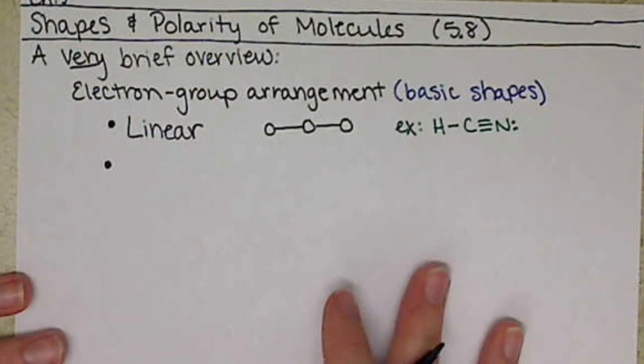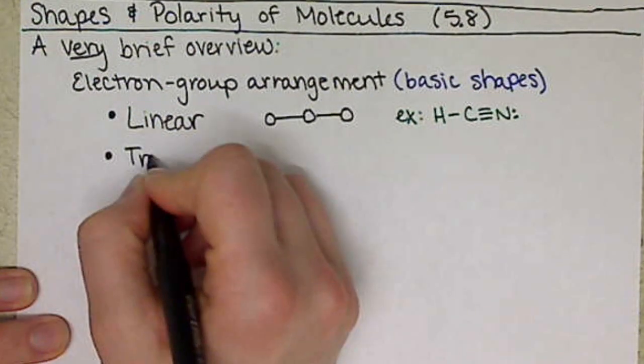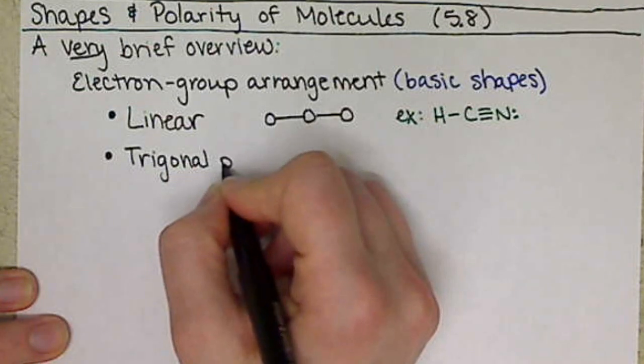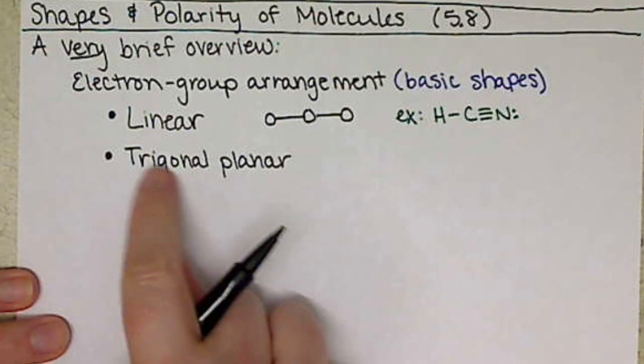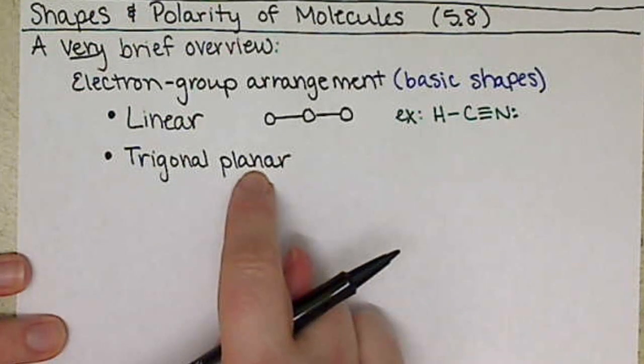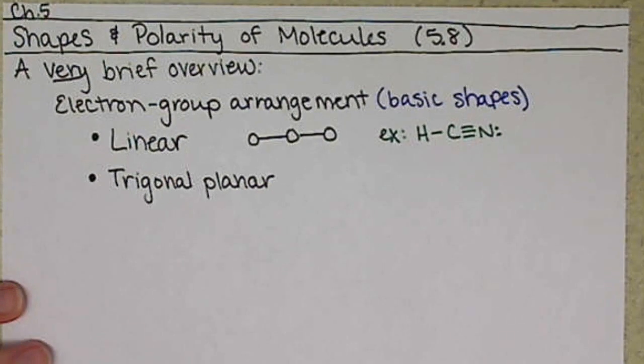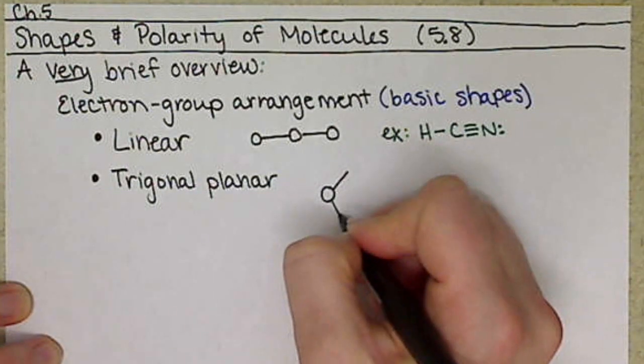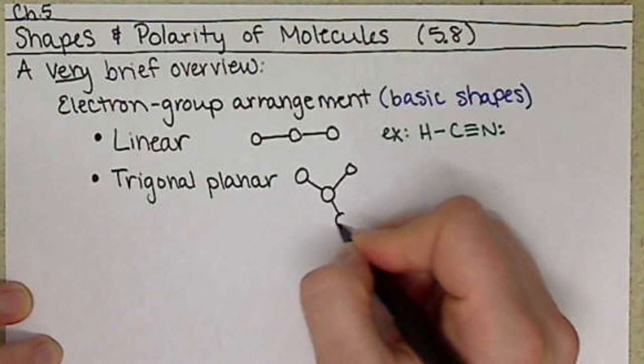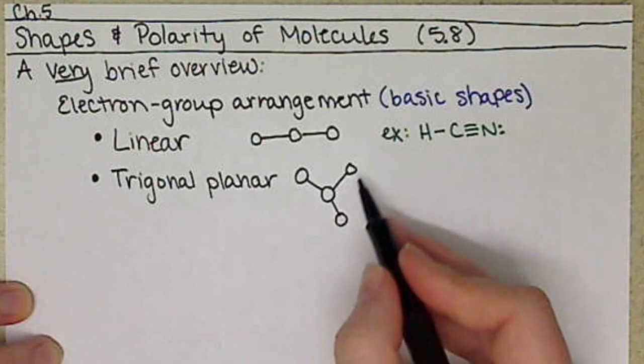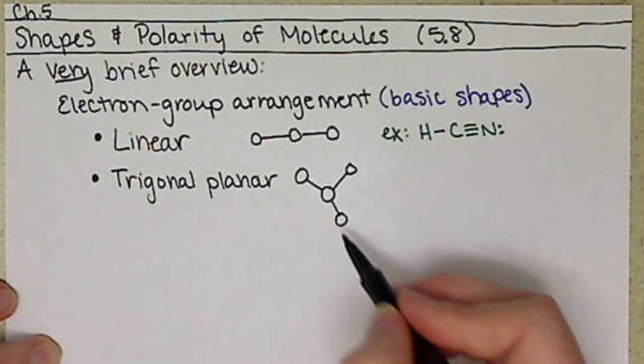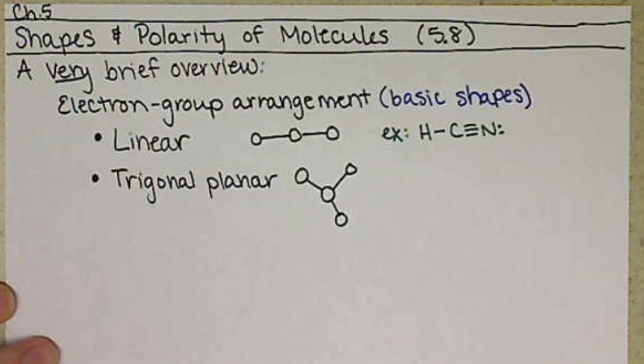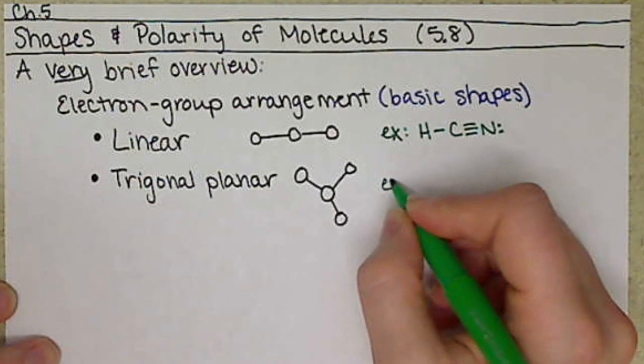Our second electron group arrangement is called trigonal planar. So triangle, three-sided shape. Planar, meaning it's a plane. So a piece of paper is a plane. It's flat. So we have essentially a flat triangle. We're going to have an atom in the center, and then either three atoms around, or one or two of these atoms could be a lone pair of electrons.